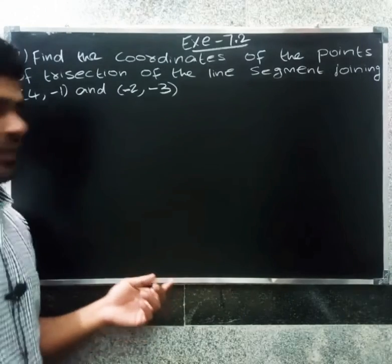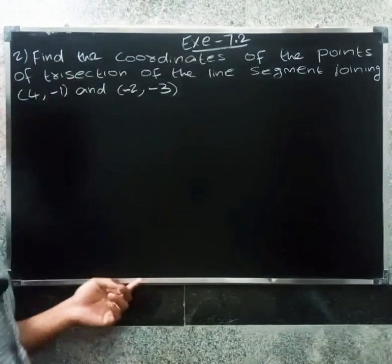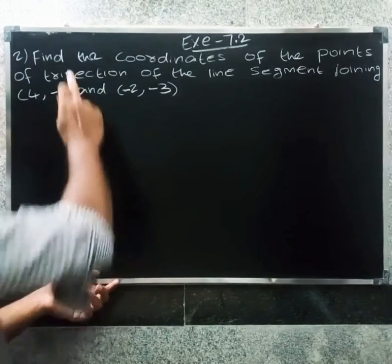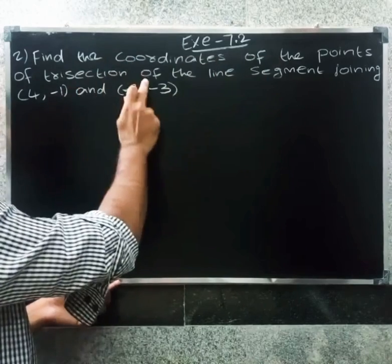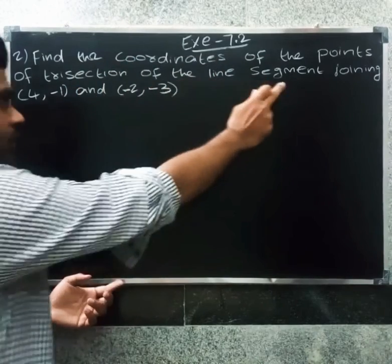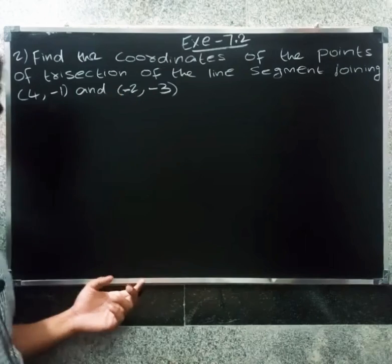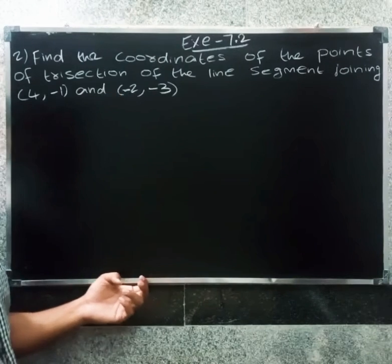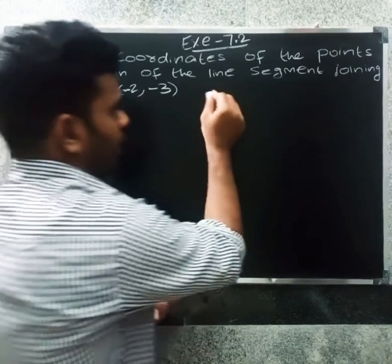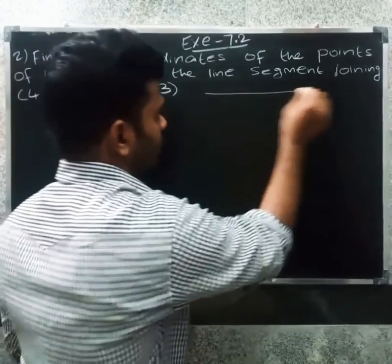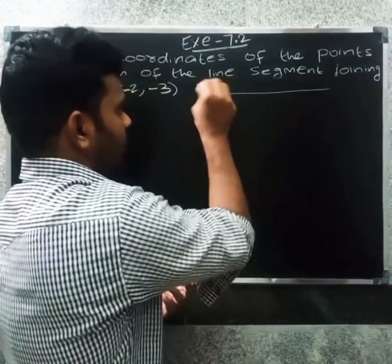Welcome friends. Find the coordinates of the points of the trisection of the line segment joining the point A and minus 2, minus 3.